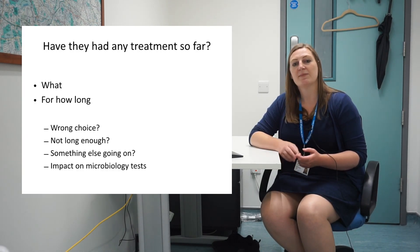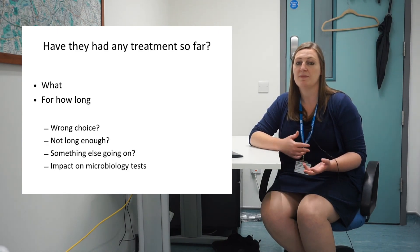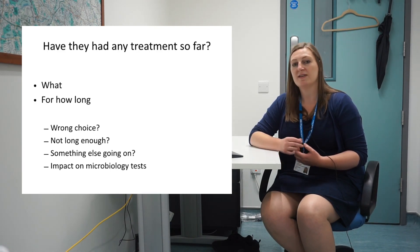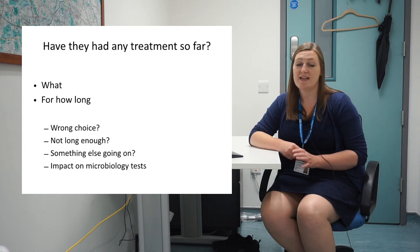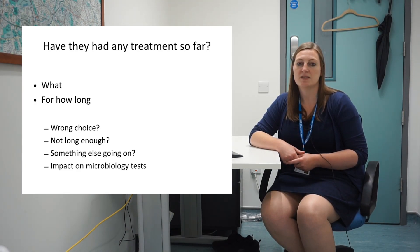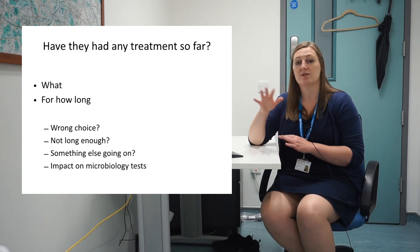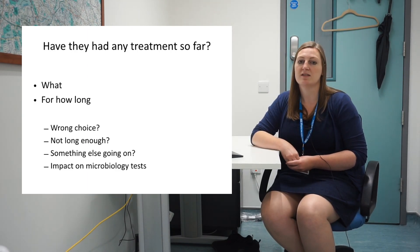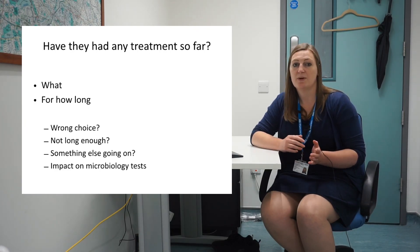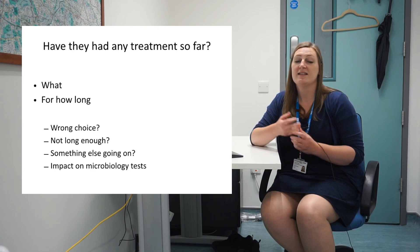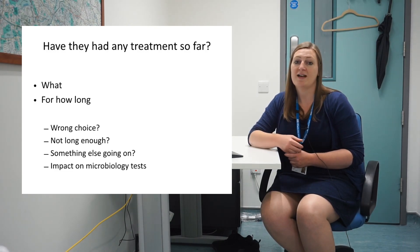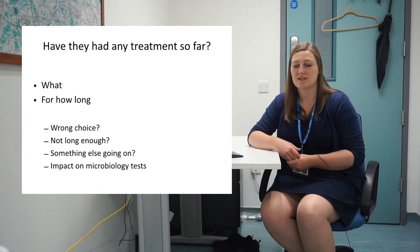It also gives you the chance to think: is there something else going on? Maybe this isn't infection - maybe it's an alternative diagnosis. Knowing about prior treatment is also important for its impact on microbiology tests. If you're lucky, maybe a test has already been sent before they reached you in hospital - perhaps the GP sent a urine sample and you can see whether they're on the right antibiotic. But also, knowing someone has had antibiotics before you take your urine sample means you might expect no growth, even if there actually is a urinary tract infection.